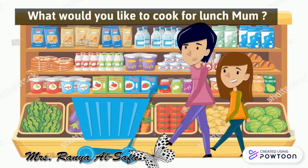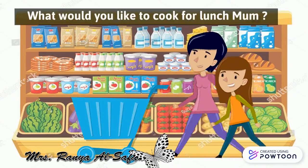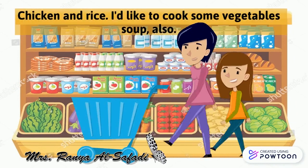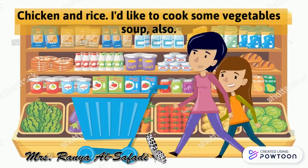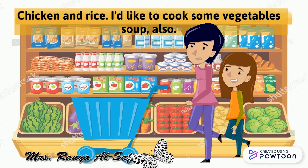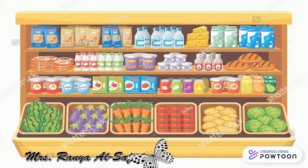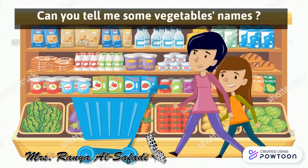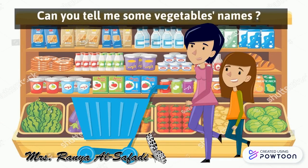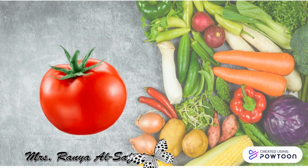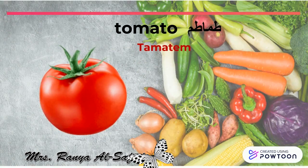What would you like to cook for lunch, mom? Chicken and rice. I'd like to cook some vegetable soup also. Can you tell me some vegetable names? Tomato — tomato.